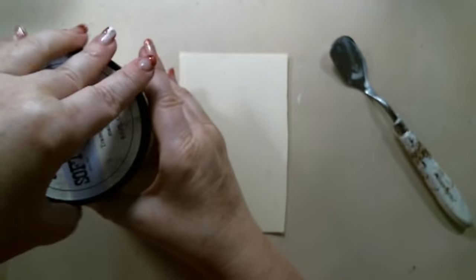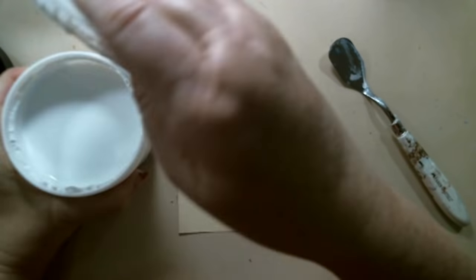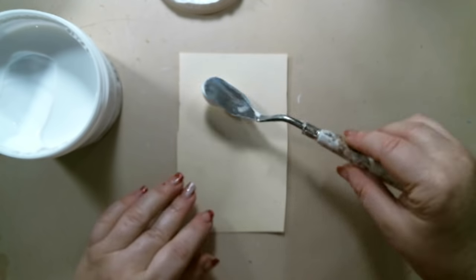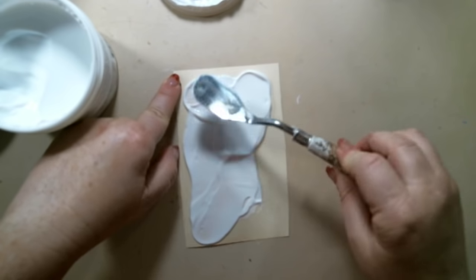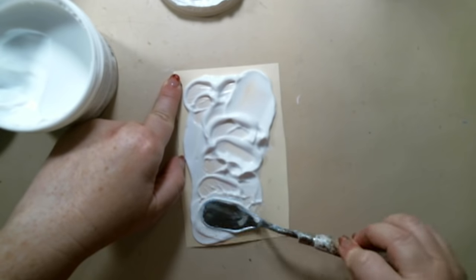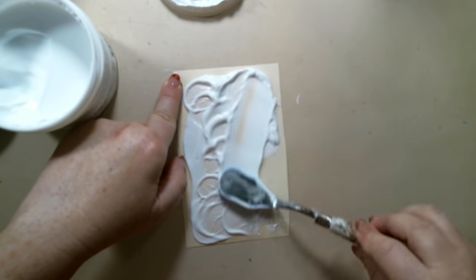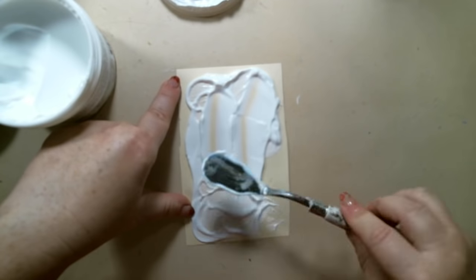Technique number ten uses soft matte gel and some sprays. The first thing I did is I used a palette knife to spread it onto the cardstock and then created some grooves in it by patting the soft gel into the background.